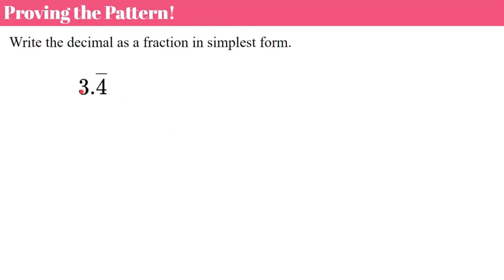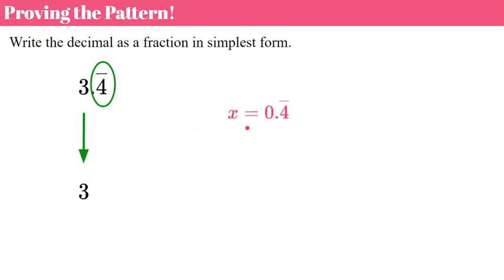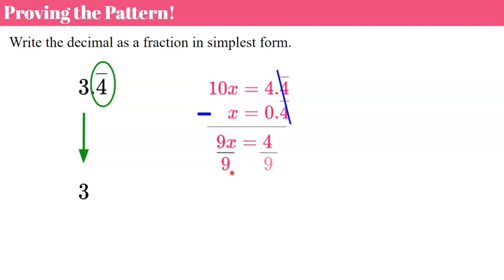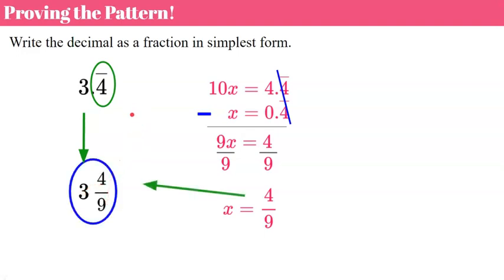Let's try 3.4 repeating. Because there's a whole number, we keep the 3 and focus on writing 0.4 repeating as a fraction. Let x equal 0.4 repeating. Multiply both sides by 10 because only one digit repeats. Subtract: 10x minus x is 9x, which equals 4. Divide each side by 9 and get 4 ninths. Bringing that back to our whole number: 3 and 4 ninths is equivalent to 3.4 repeating.